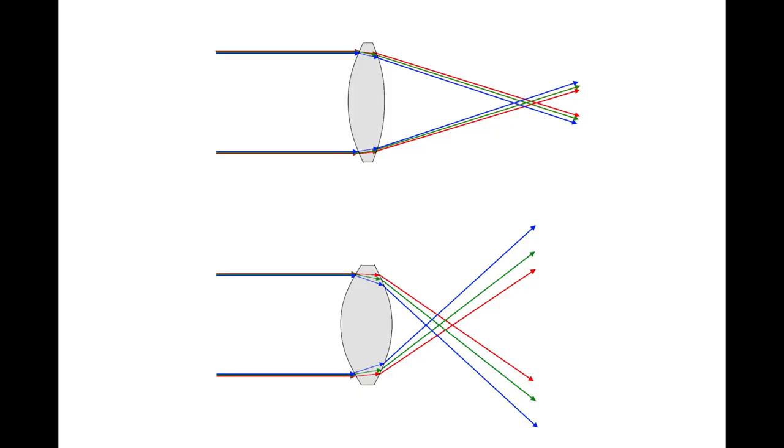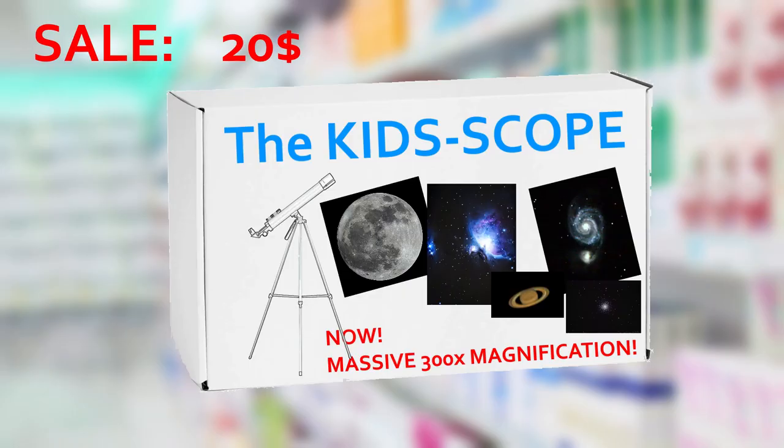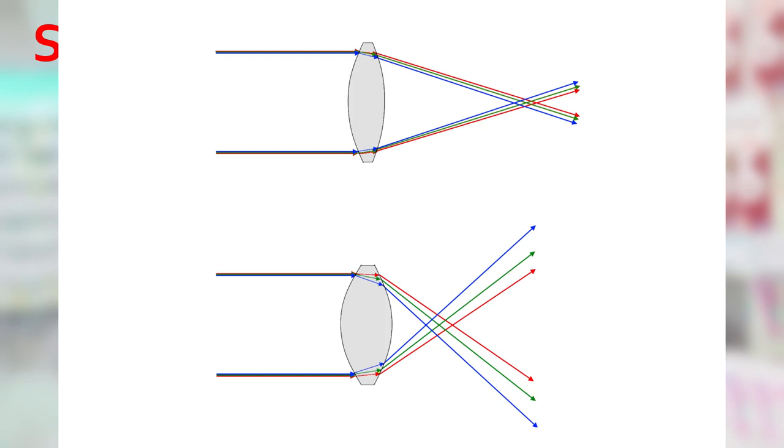The thumb rule? The lower the f ratio, so the shorter the focal length with a given aperture, the more curved the lens is and therefore the more significant the chromatic aberration is. So single lens scopes are cheap but needs to be very long. Long focal length means less curved lens and therefore less chromatic aberration.